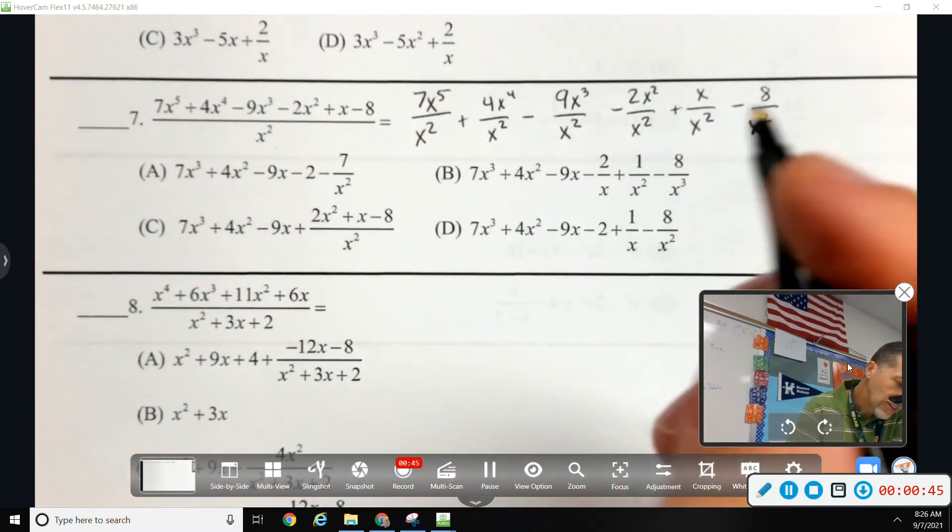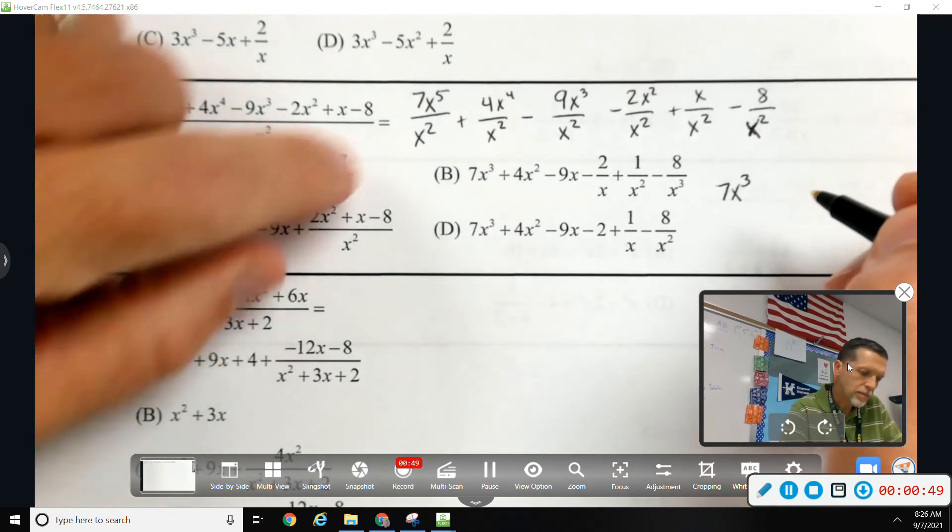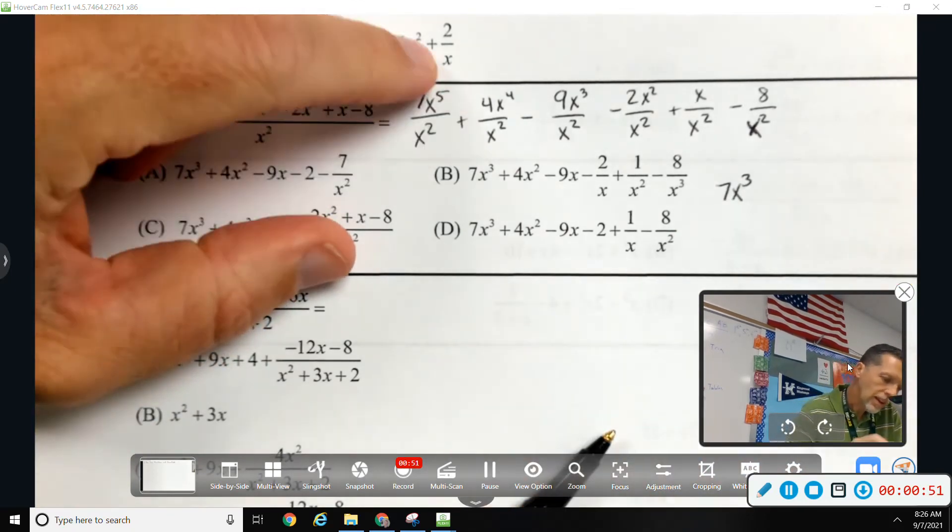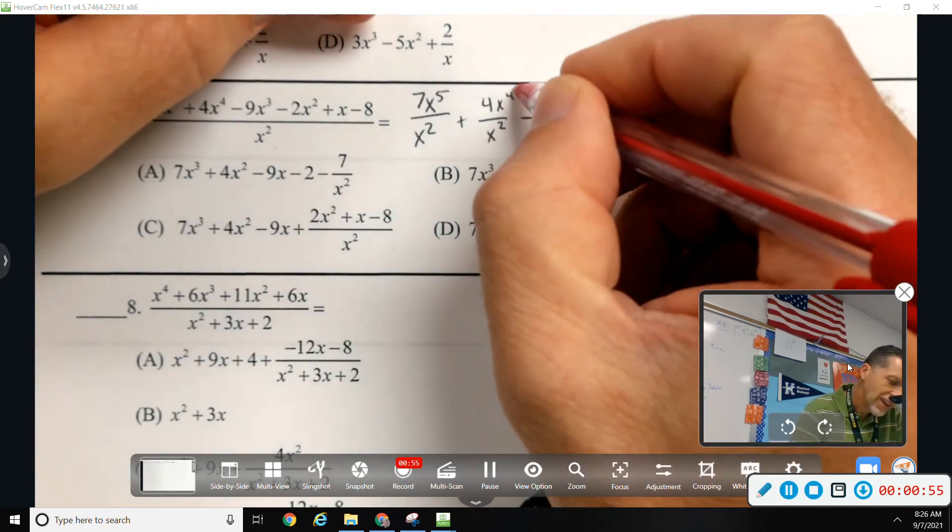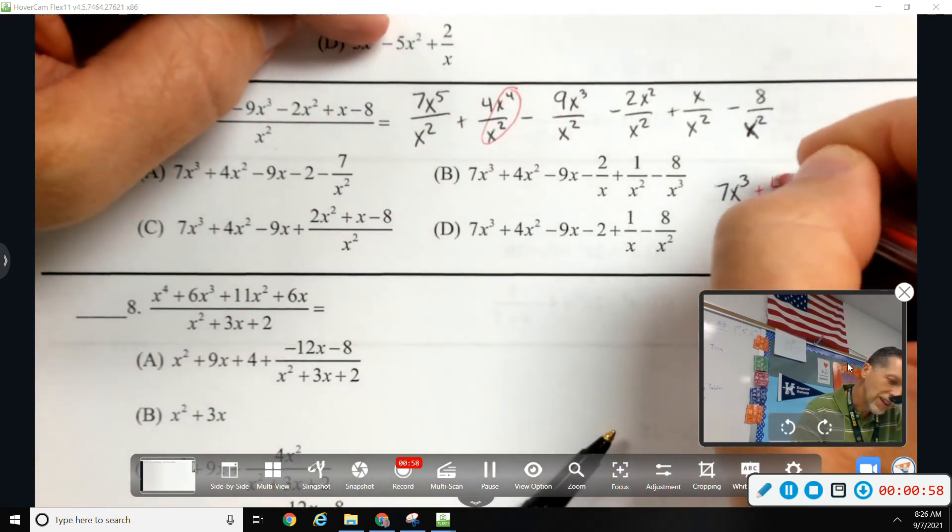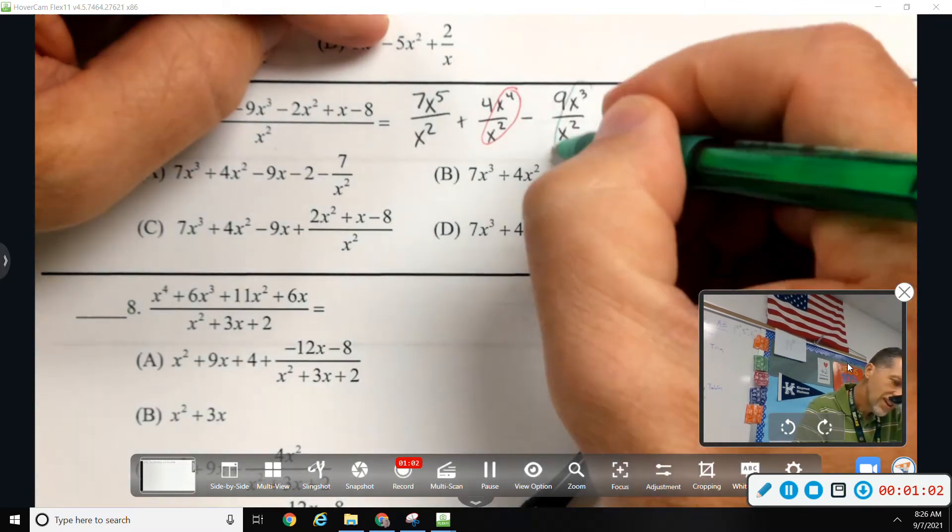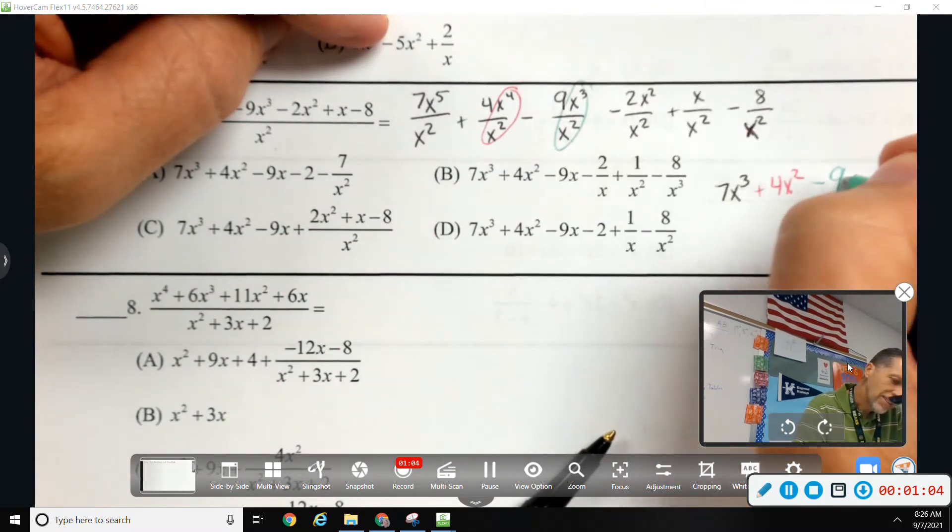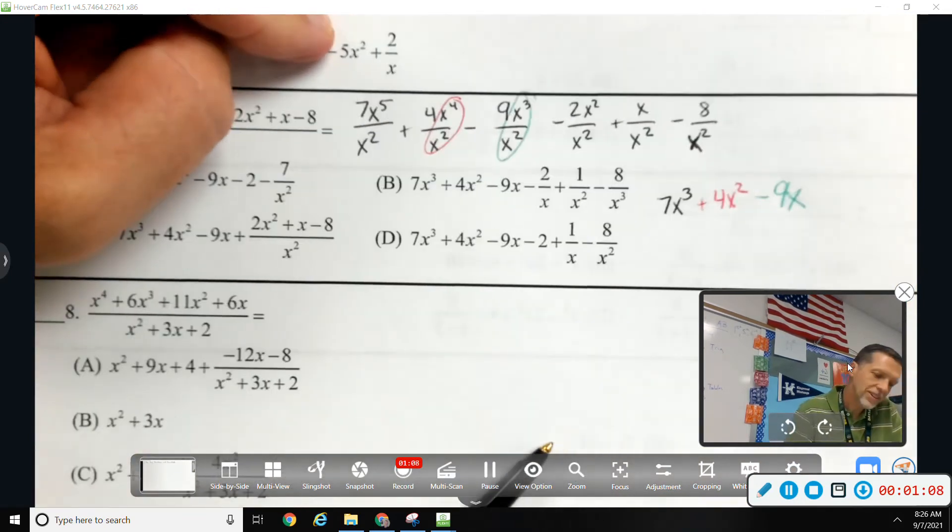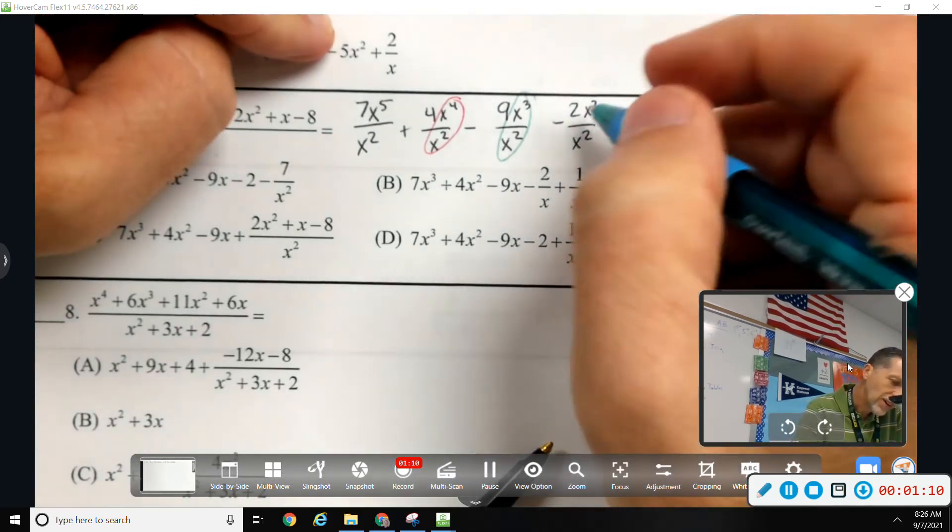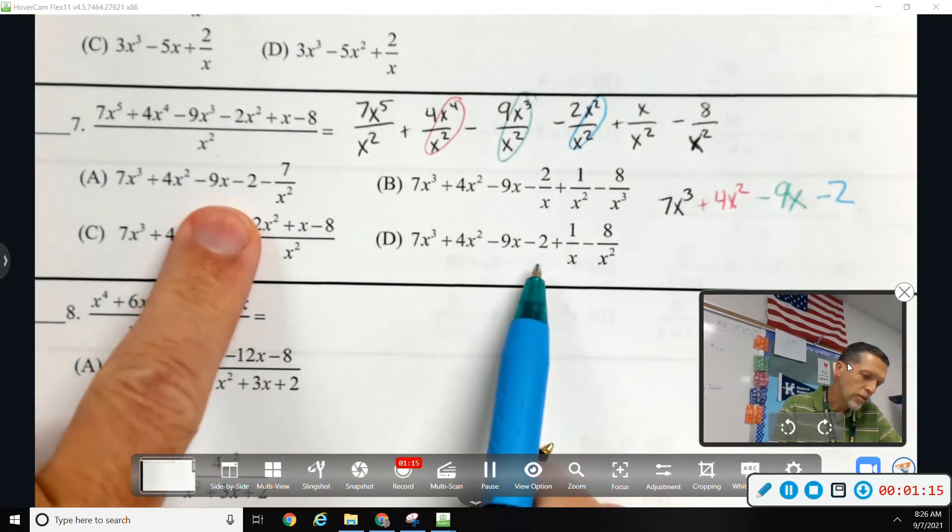Because x to the fifth over x squared would be x cubed. I'm going to start writing them out. That's all of them, so let's keep going. x to the fourth over x squared would be x squared. Minus 9x. Start to run out of colors here. Minus 2. I bet a bunch of them have that. At least two of them have that.